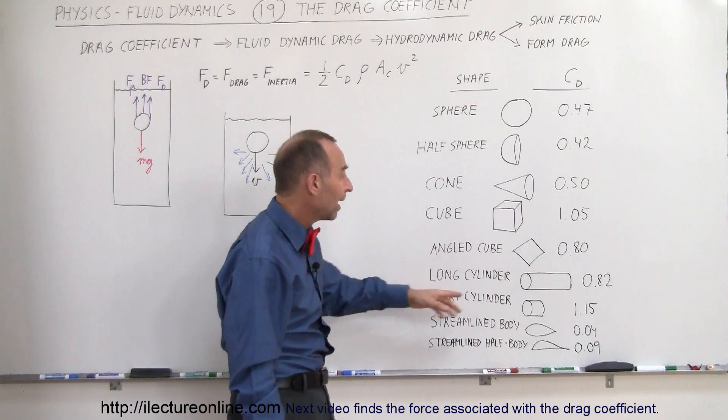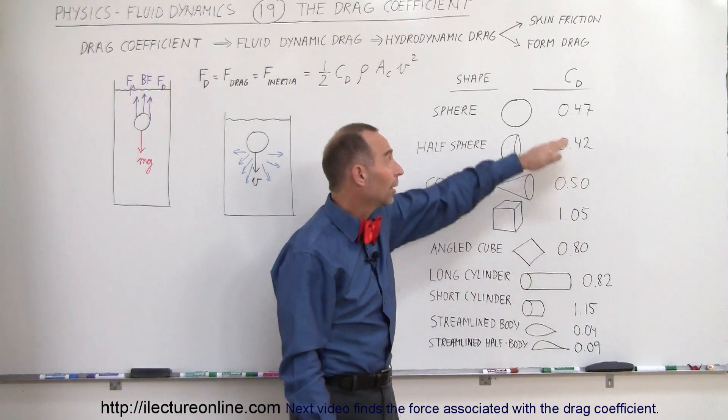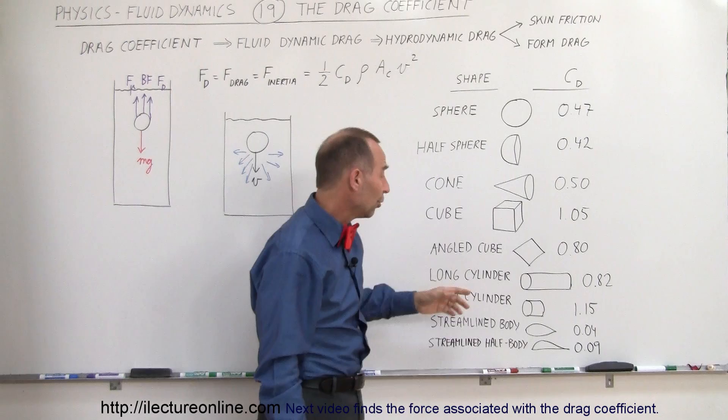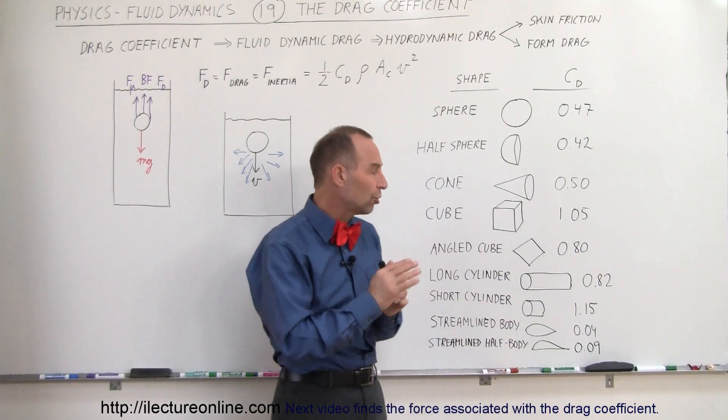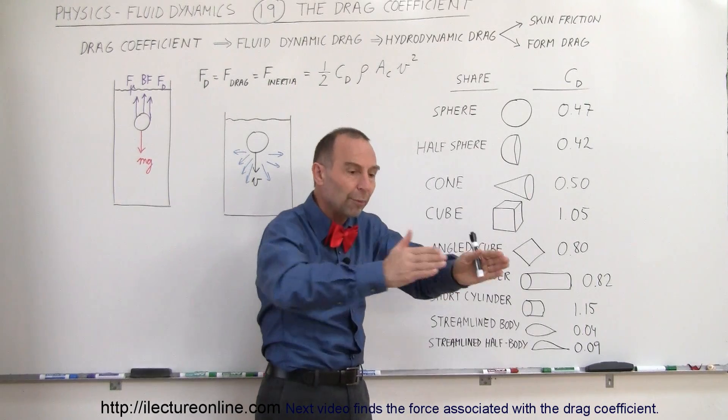A long cylinder has a drag coefficient which is less than a cube, but more than a sphere. And notice that if the cylinder becomes shorter, the drag coefficient goes up by quite a bit. It really has to do with how the fluid can go around.